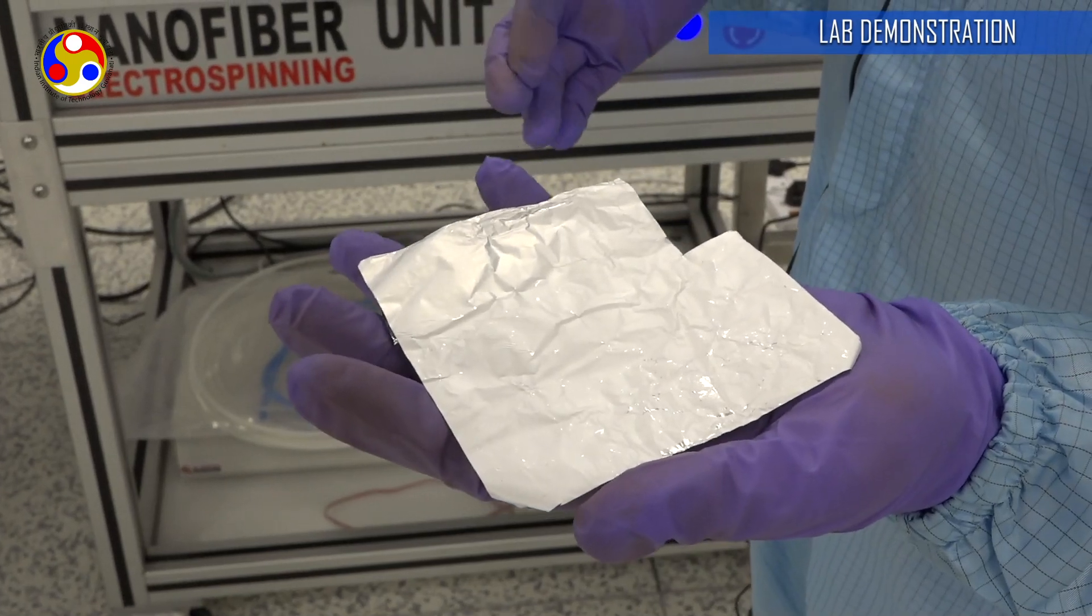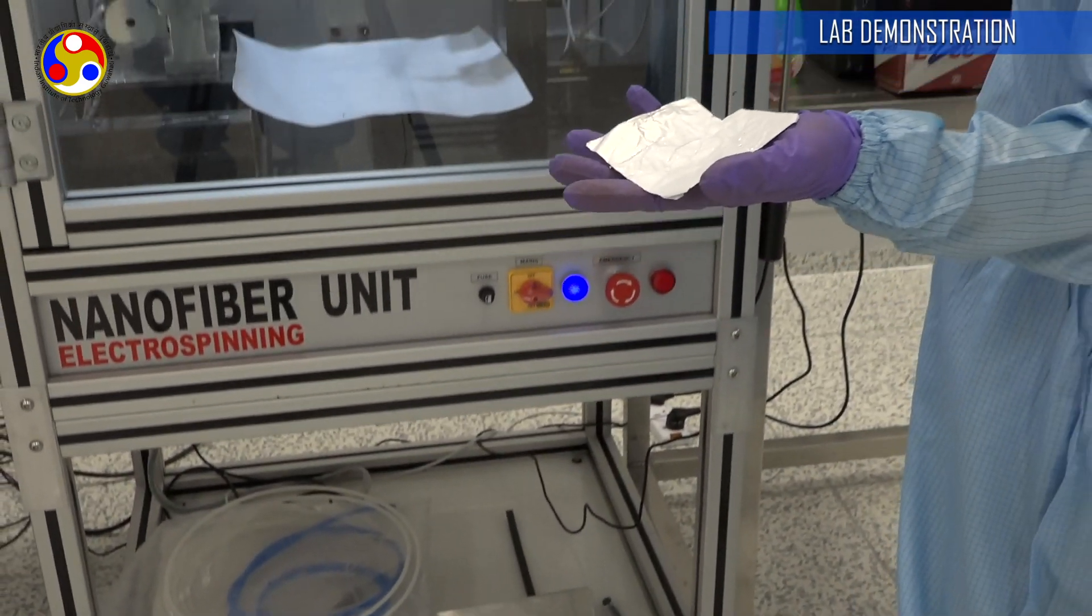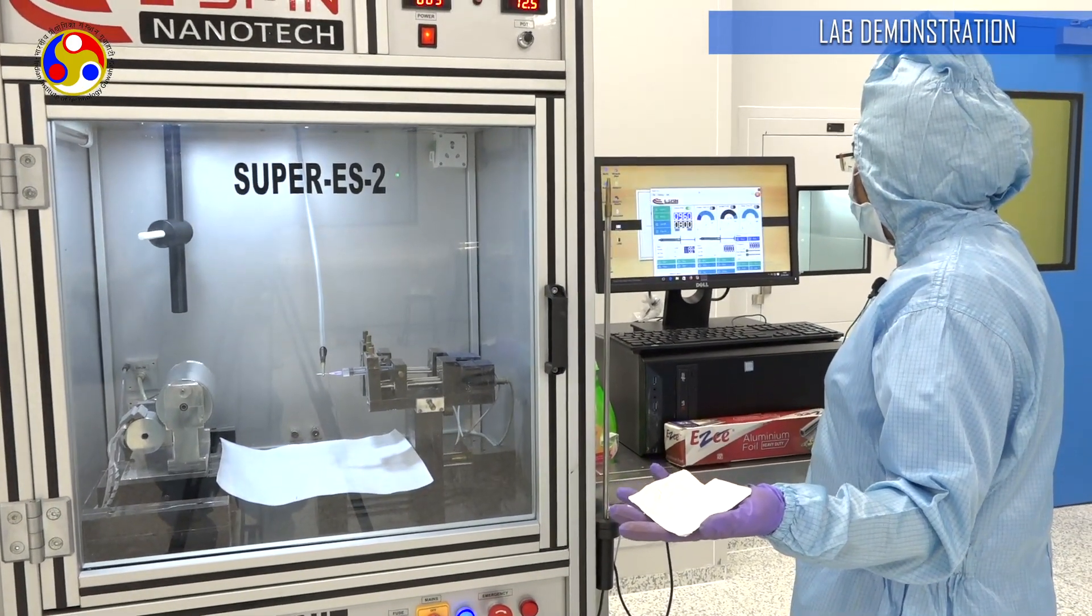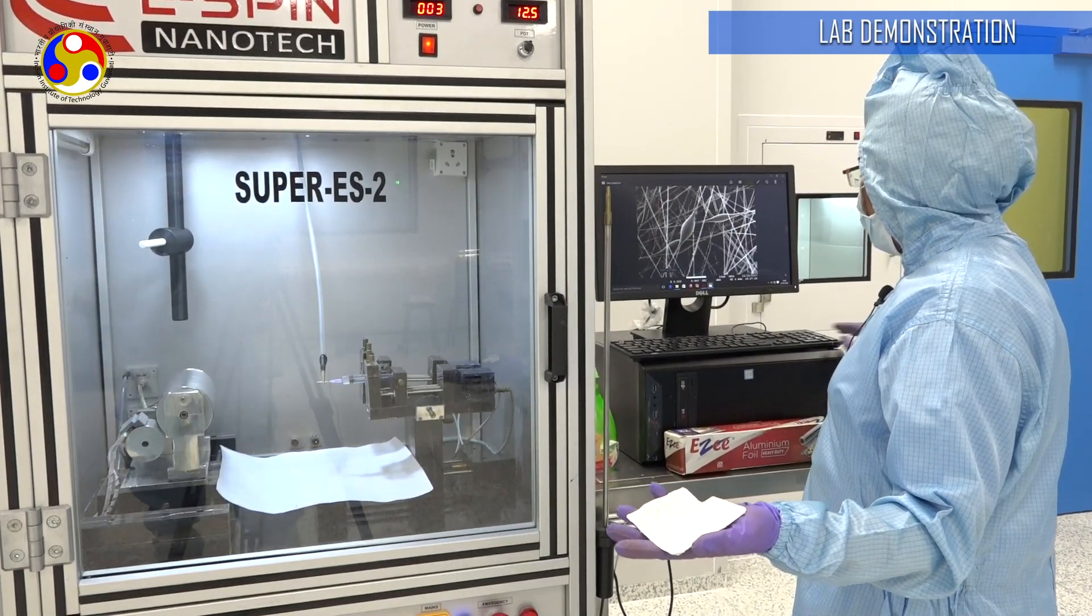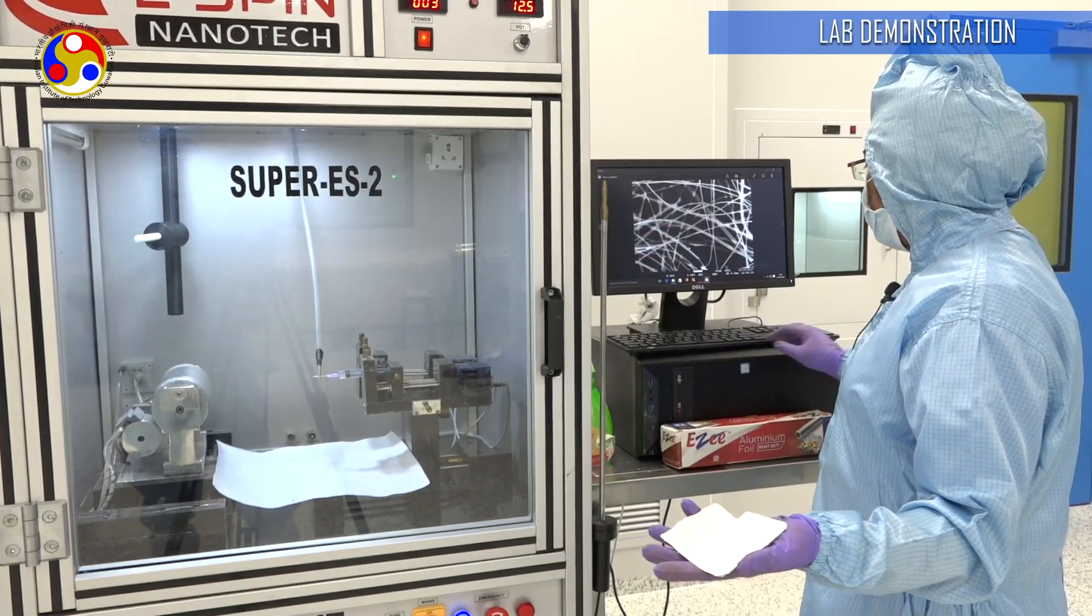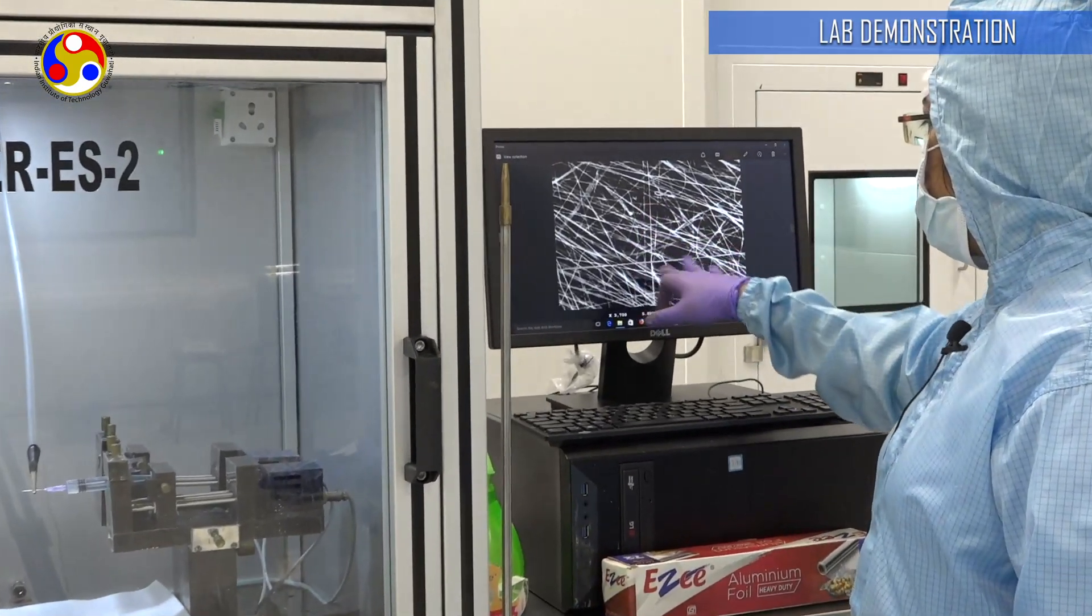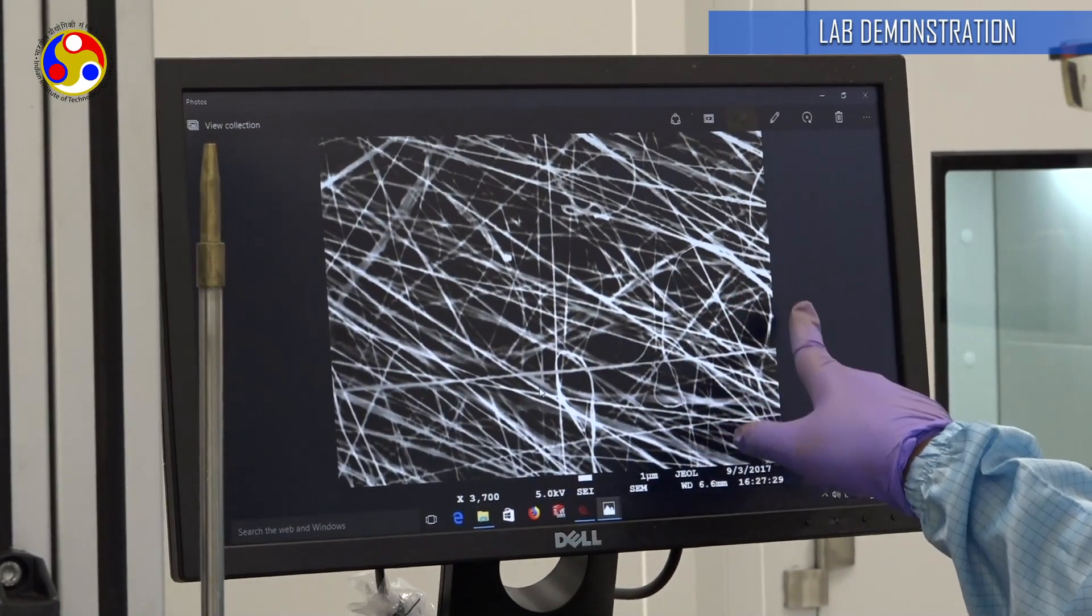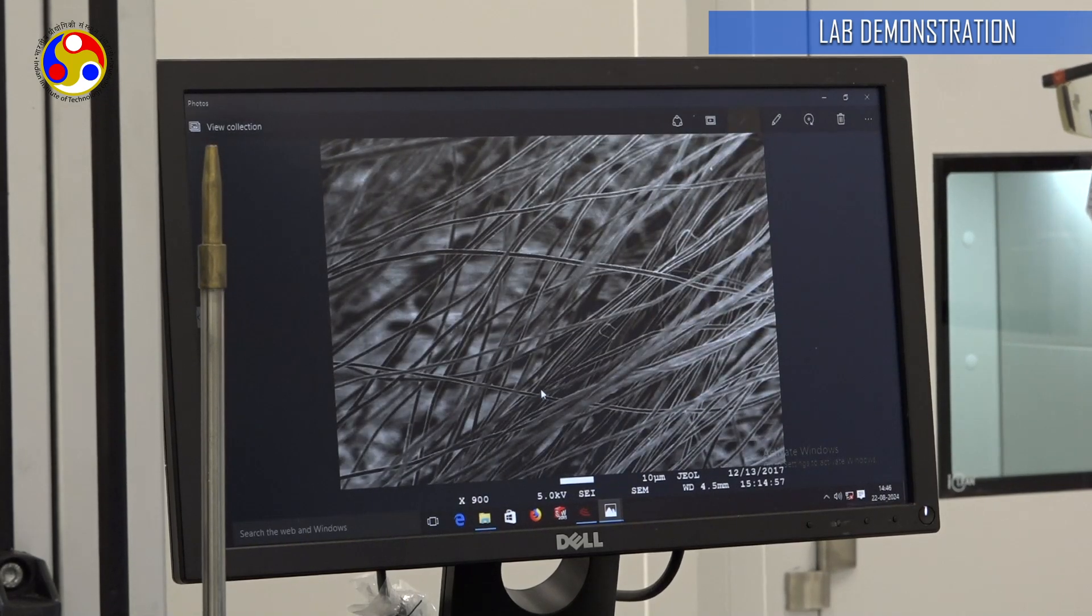Of course, we won't be able to see the fibers or its dimensions with our naked eye. We have some sample images here, which were taken under SEM micrograph. These are some of the sample images that we have made here with this device. Typically we use a 10 percent PMMA solution to make these fibers. These are well below 1 micron diameter range, as you can see.